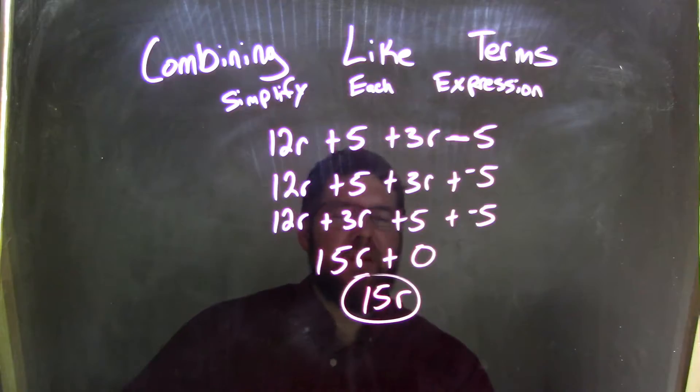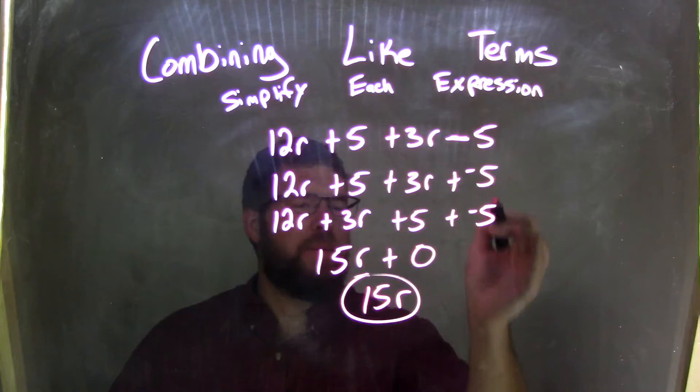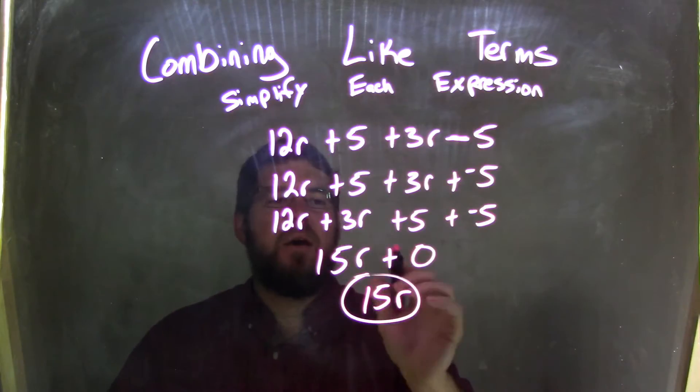So now we have 12r plus 5 plus 3r plus negative 5. And now we use the commutative property to write 12r plus 3r plus 5 plus negative 5, making sure we brought everything down, which we did.